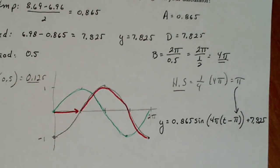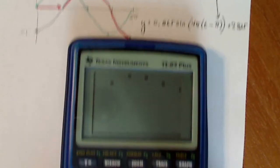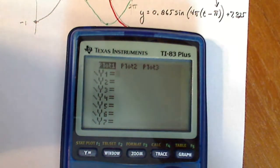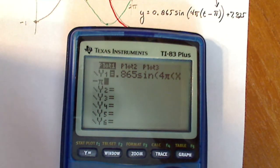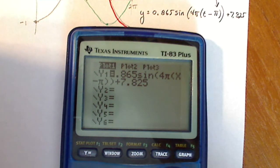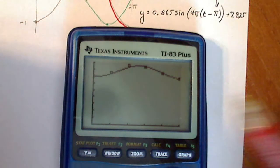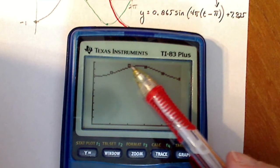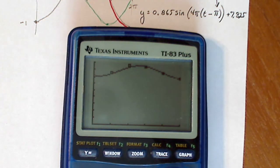All right, now let's see if this works. Crossing fingers, right? So let's turn this on. Let's move this up a little bit. So y equals 0.865 sine of four pi x minus pi plus 7.825. Let's see how that works with our data graph. It seems to go through all the data points rather nicely actually except this one. And that's probably because I didn't choose the highest point. I knew it was somewhere in between here but otherwise it looks really good going through the data.